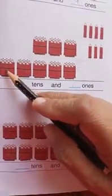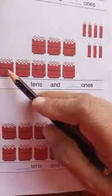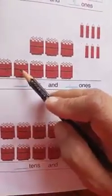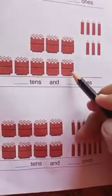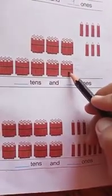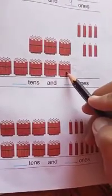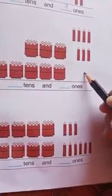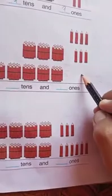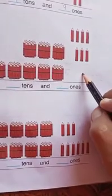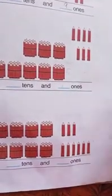Now next. How many tens are here? One, two, three, four, five — there are five tens and no ones. It means five tens means 50. Zero ones.